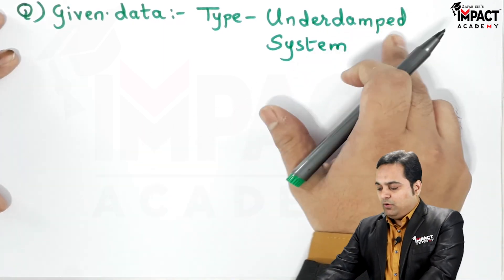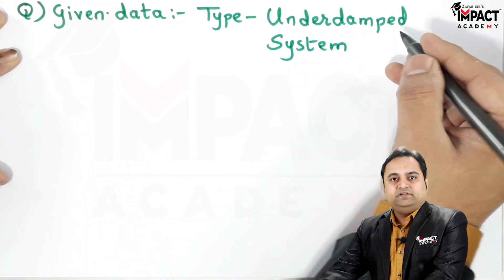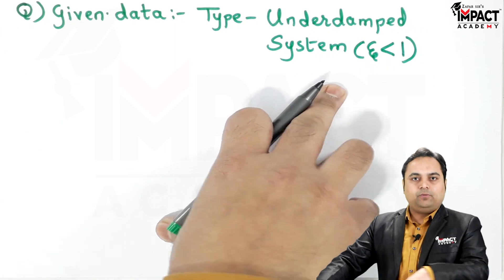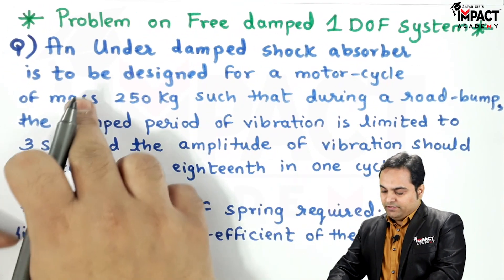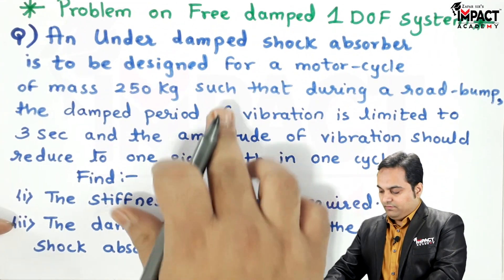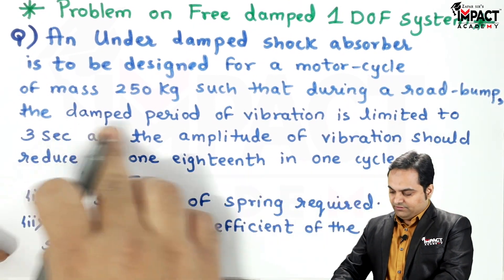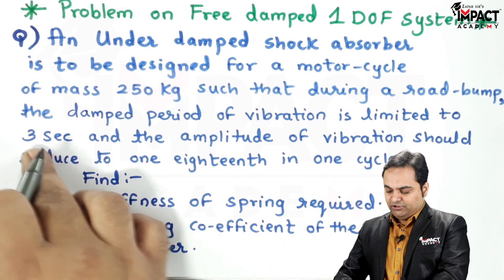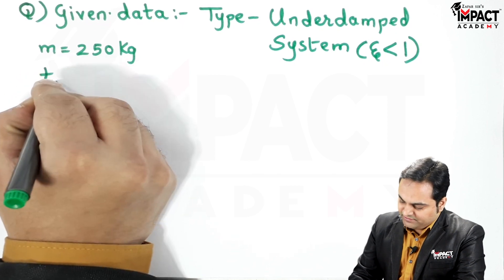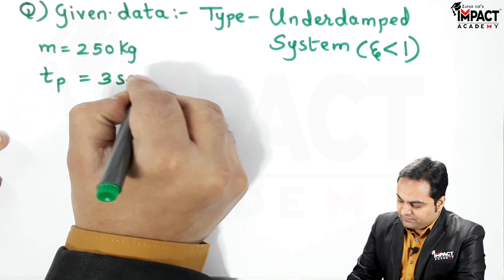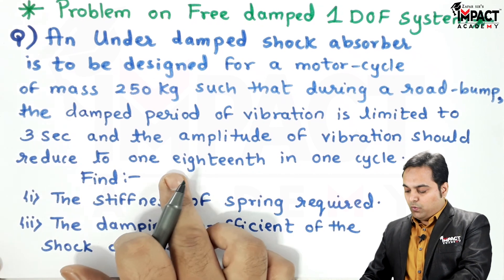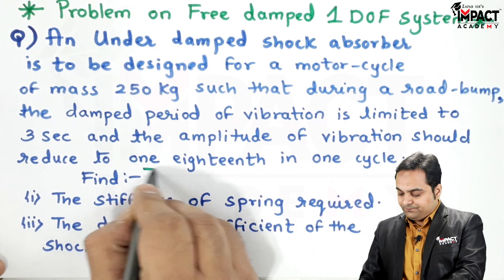We have an underdamped system. Whenever we have an underdamped system, the damping factor zeta will always be less than 1, and this we are going to prove in the problem. It is to be designed for a motorcycle of mass 250 kg such that during a road bump the damped period of vibration is limited to 3 seconds, denoted by T_p.